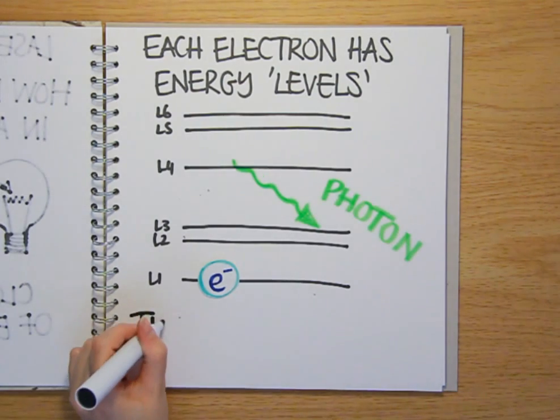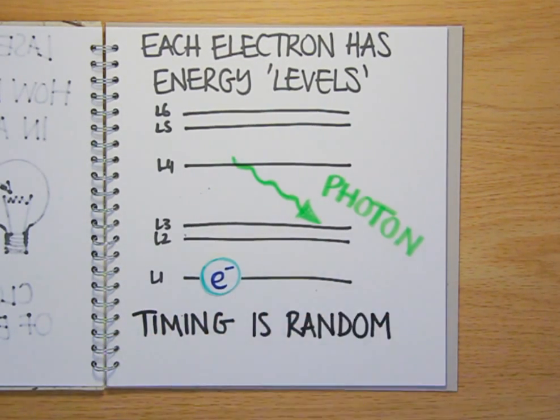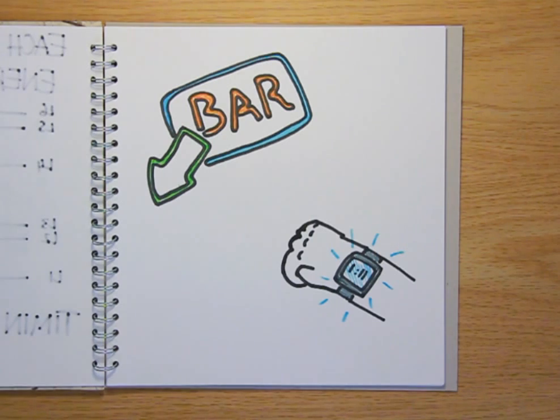The timing with which this happens and the direction in which the photon is emitted are both completely random. Some electrons might drop back down after one microsecond, others might take ten. And far from being a minor foible of quantum mechanics, this process is actually the very reason why anything lights up at all. Whether it's a neon sign outside a convenience store or the glow of your digital watch.